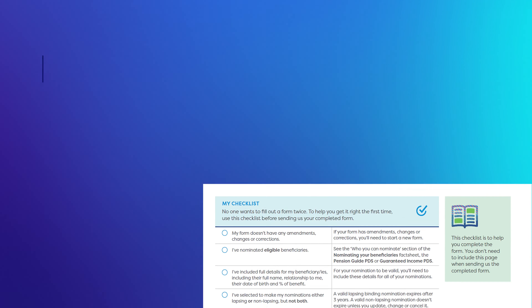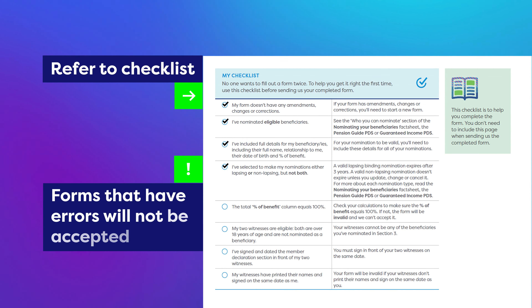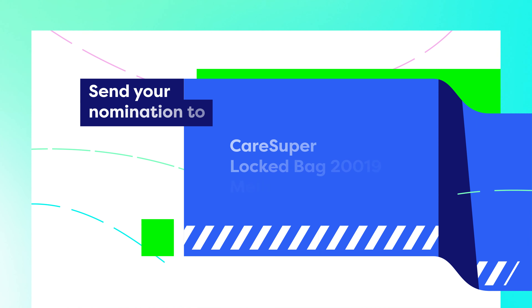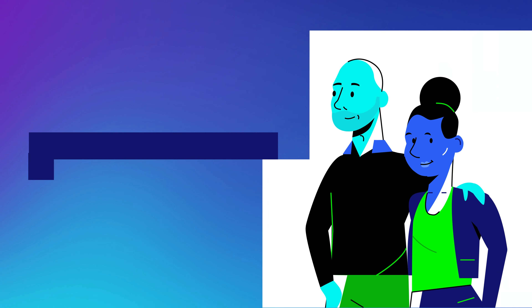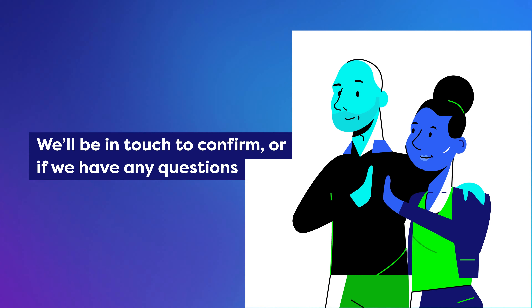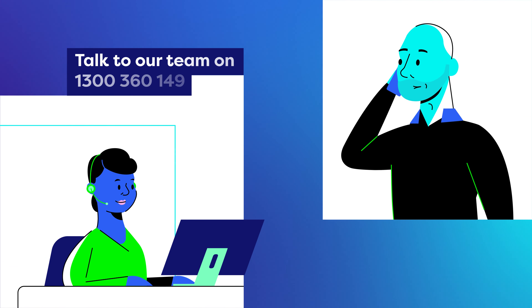Lastly, it's a good idea to complete the checklist to make sure you've provided all the details needed and completed the form correctly. Once you're done, mail your form to us. We'll confirm your binding beneficiary nomination in writing, or we'll get in touch if we have any questions for you. If you're unsure of anything, you can talk to our team.